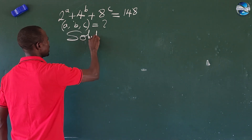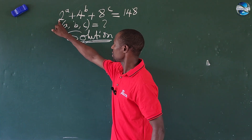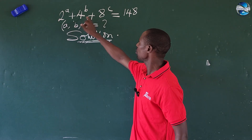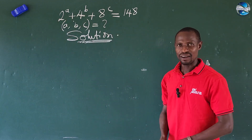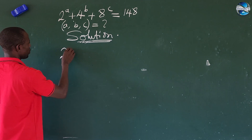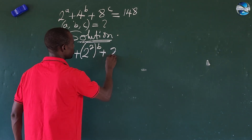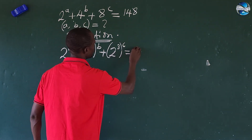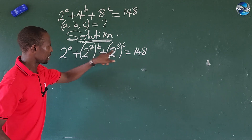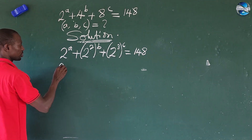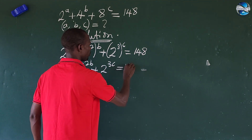The first thing we do is look at these figures. 2 is in base 2, 4 can also be expressed in base 2, and 8 can also be expressed in base 2. So let's go ahead and express all terms on the left-hand side in base 2. We get 2 to the power of A plus 2 to the power of 2B plus 2 to the power of 3C, equal to 148.